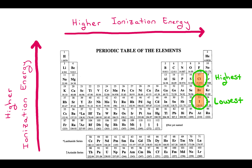So to list those from lowest to highest in increasing order, it would be iodine, then bromine, and then chlorine.